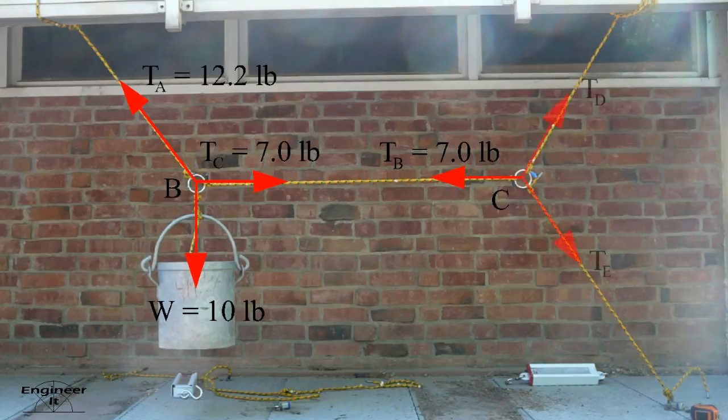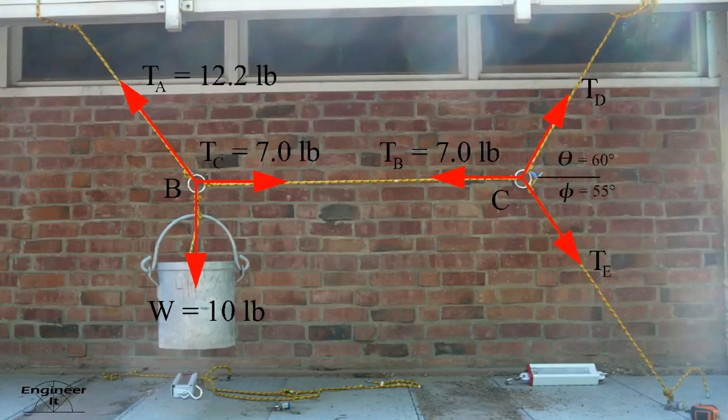To keep point C in equilibrium, tensions D and E must pull on point C as well. The angles are measured and we are ready to draw the free body diagram for point C.